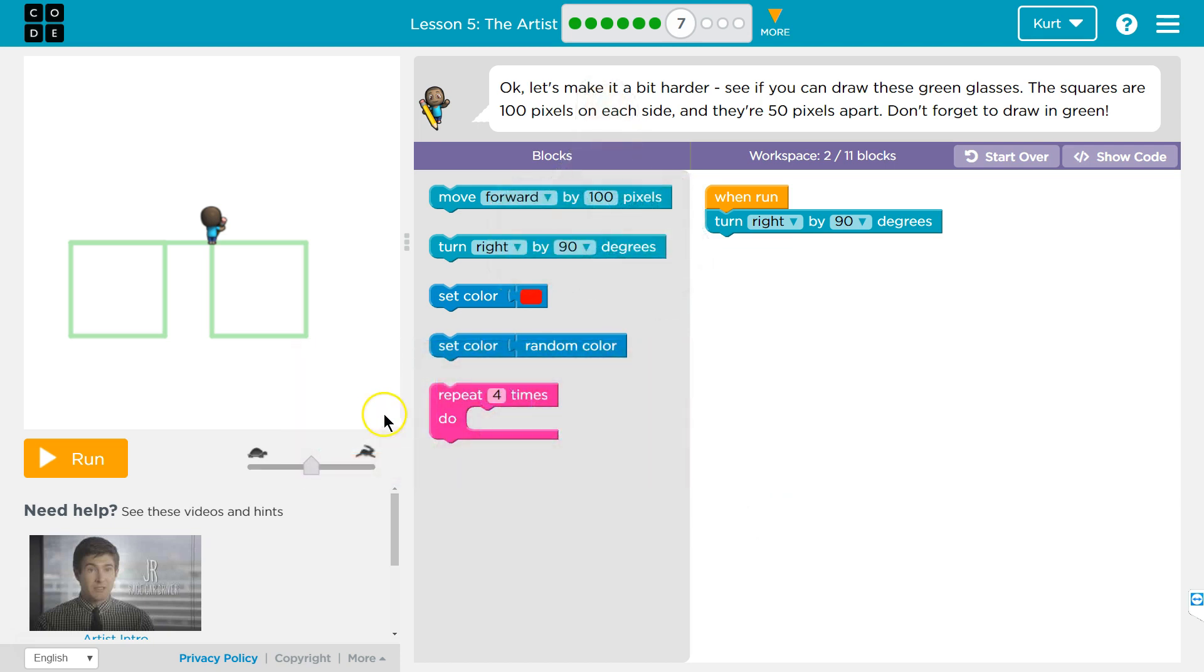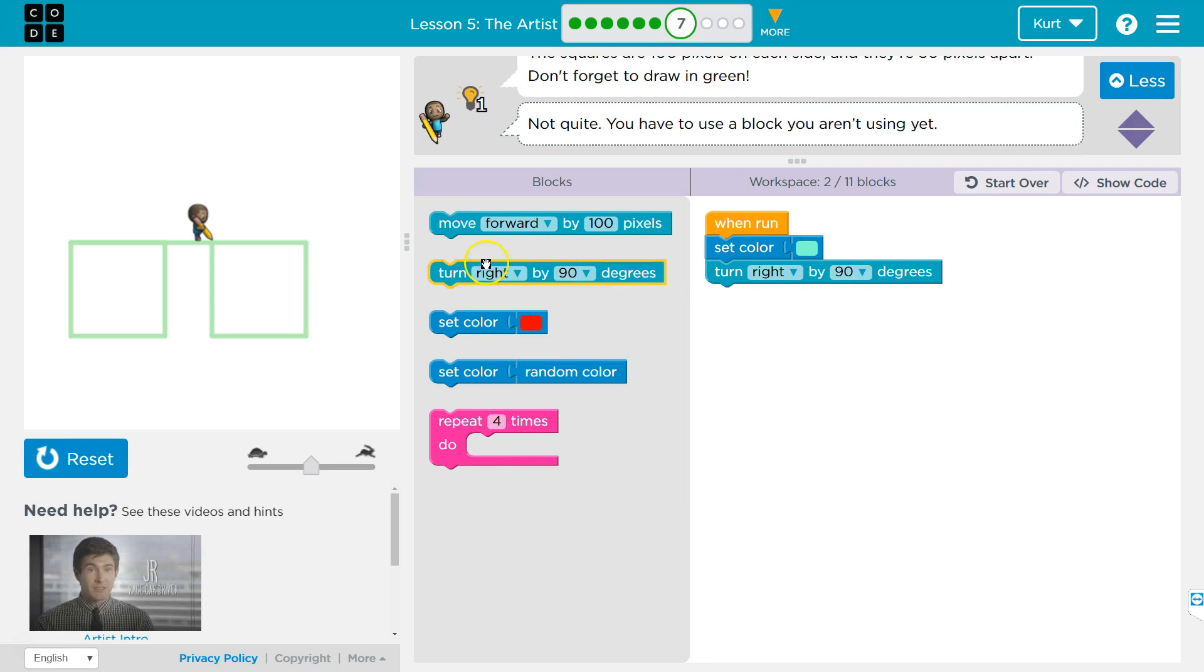Okay. Alright, well, we can use 11 blocks. Alright, so I know I need set color if they want it in green, and I guess I'll pick, is it this green, maybe? I can't really tell. Oh, well, I'm not even drawing yet. Let's throw down and move forward.